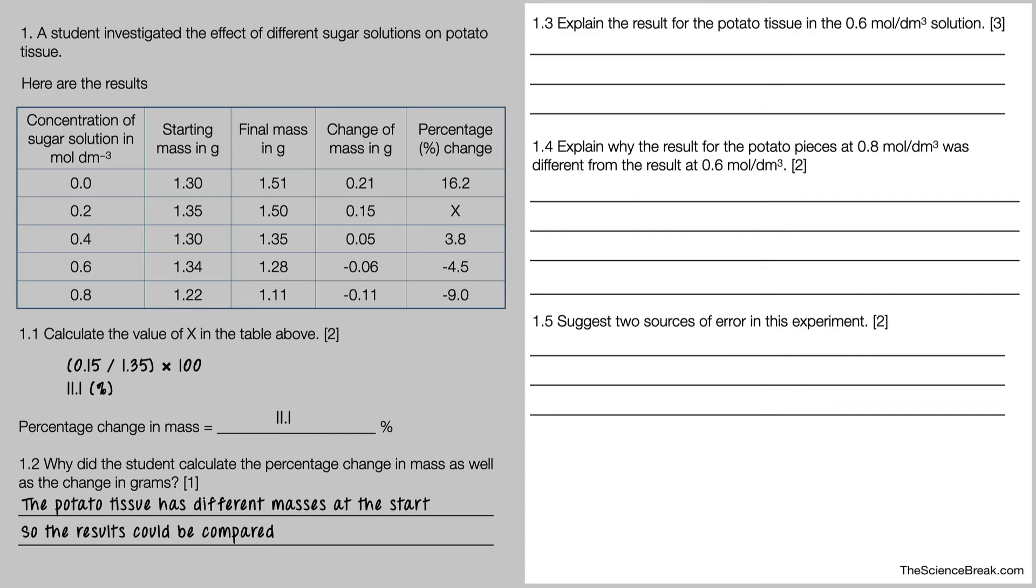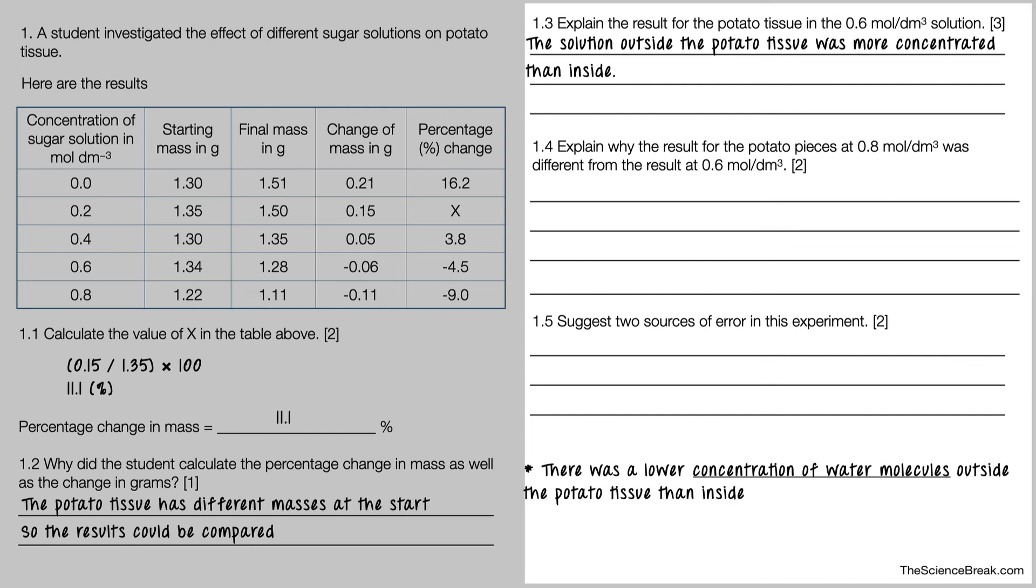Question 1.3 says explain the result for the potato tissue in the 0.6 mol/dm³ solution. This is asking why we have a loss in mass for the 0.6 mol/dm³ solution. The answer is the solution outside the potato was more concentrated than inside. We could also say there was a lower concentration of water molecules outside the potato tissue than inside, and that means water moved out of the potato tissue by osmosis. That would create the three marks for that question.